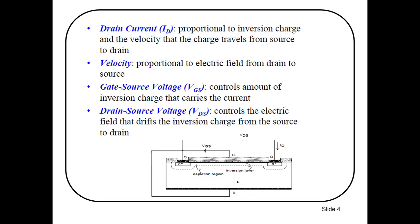Before going to the detailed lecture, we will discuss some important parameters like drain current, velocity, gate-source voltage, and the drain-source voltage. Drain current is proportional to inversion charge and the velocity that the charge travels from source to drain. Similarly, velocity is proportional to the electric field from drain to source and gate-source voltage VGS.